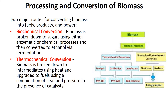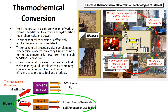In thermochemical, there are different technologies depending on the temperature used. One is gasification, which uses high temperature to make syngas that can be converted into Fischer-Tropsch liquid fuels, while pyrolysis produces bio-oils.